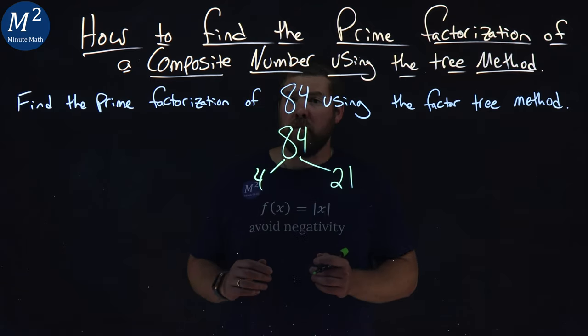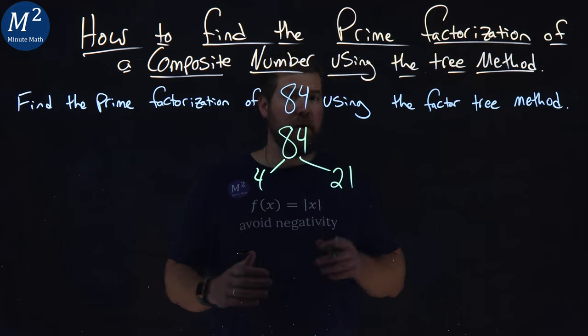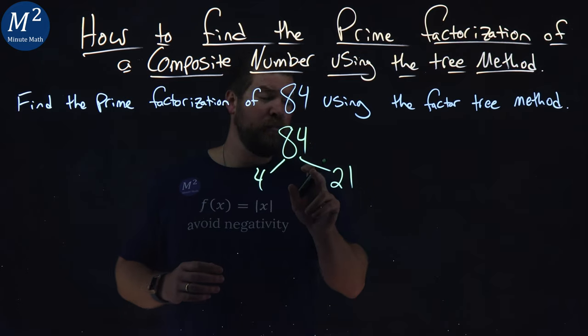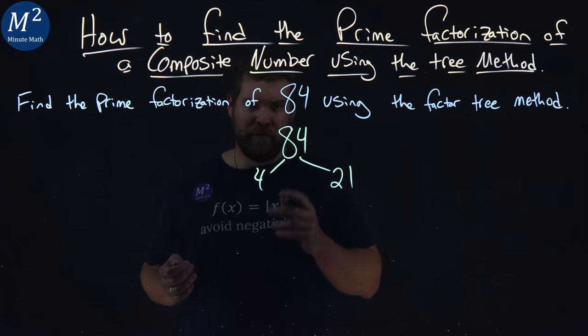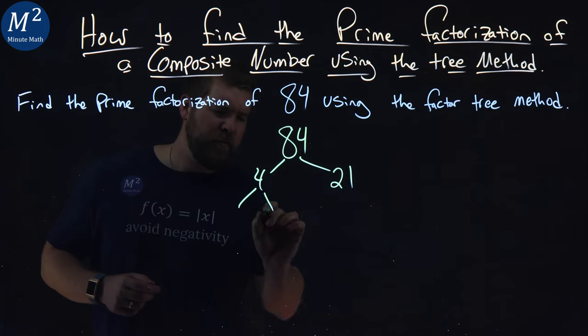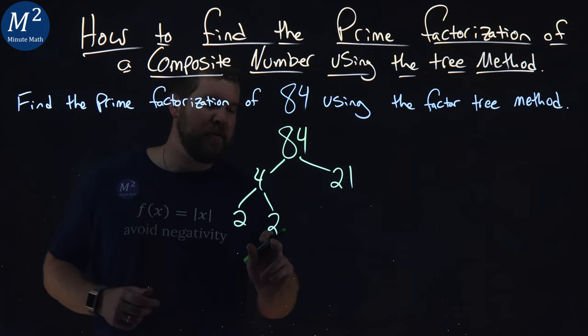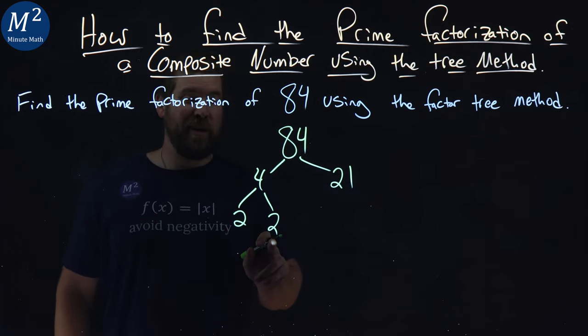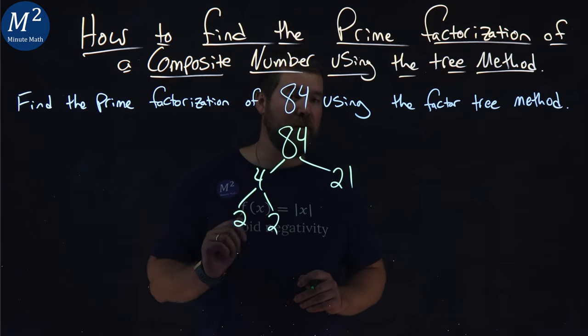Neither of these numbers are prime. 4 can be broken down again. Notice these branches just like a tree. Get it? 4, 2 times 2. Now we have prime numbers. We can't break them down anymore. Hence, prime factorization.